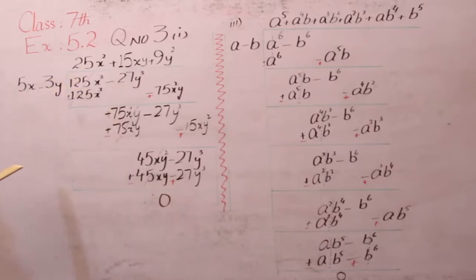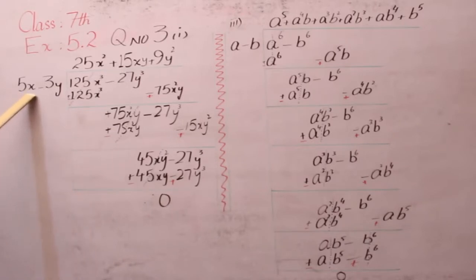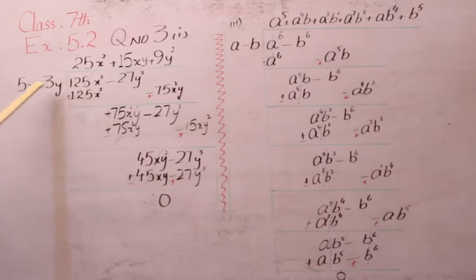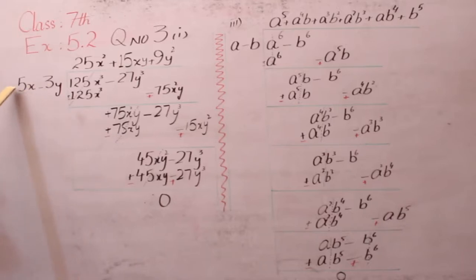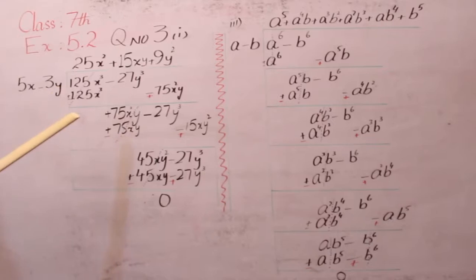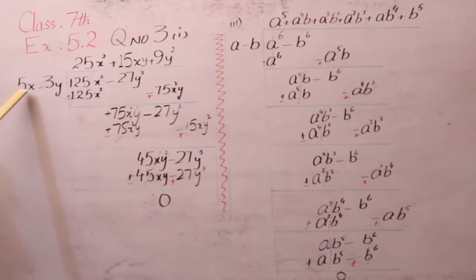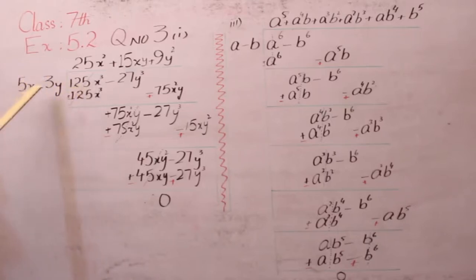यहां पर पहली value 125x की 3 है — यह x का cube है। तो आपके पास पहली value क्या है? 5x। इसी से आपने इसको पूरा complete करना है। देखें: sign plus का है, तीनों चीज़ें — sign, coefficient, variable। Sign plus का है इसलिए फर्स्ट value के साथ plus का sign अलग से नहीं लगाते। 5 को किससे multiply करें कि 125 बने?